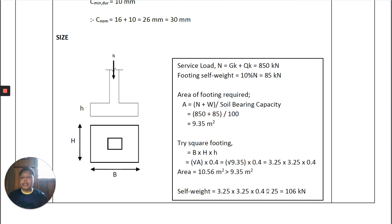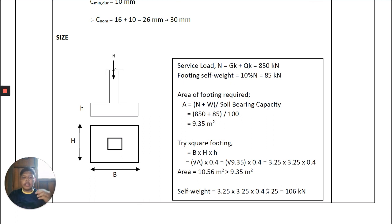The next process is to determine the size of the foundation we are going to design. We need to justify the size in order to design the footing under the axial load. Normally for axial load we will use a square footing, while other types of loading may require a rectangular shape or a combined footing.